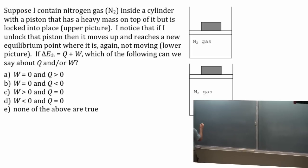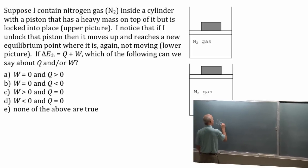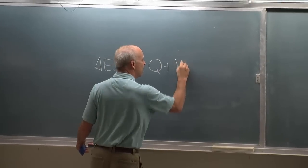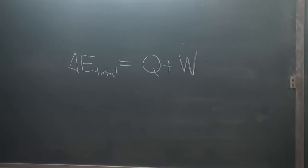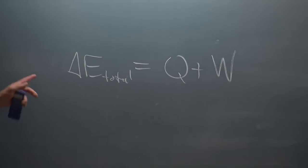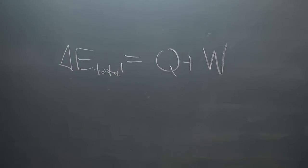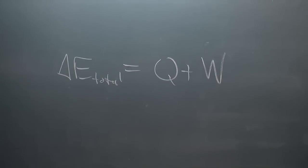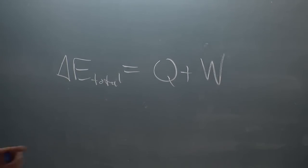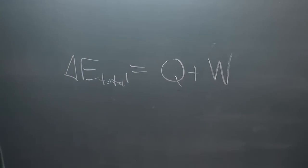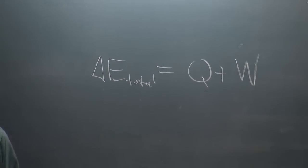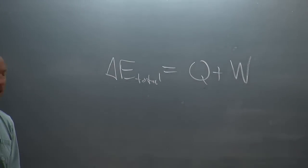So I say if delta E thermal equals Q plus W. And I'm hoping you just know this one. It's total energy changes for some system. If you have a system that you've defined, a physical system, and its total energy changes, then energy must have been transferred in or out. That's another statement of conservation of energy. Energy is conserved. The total energy is a constant.